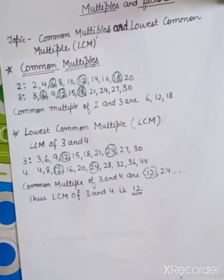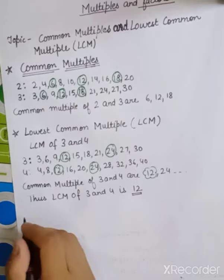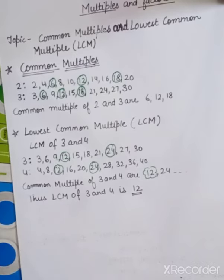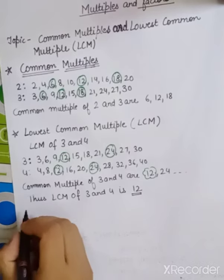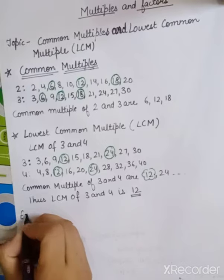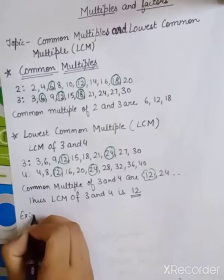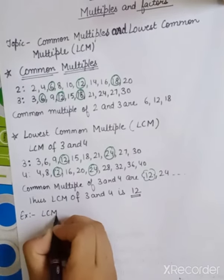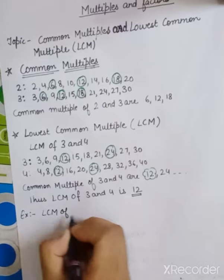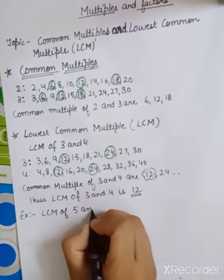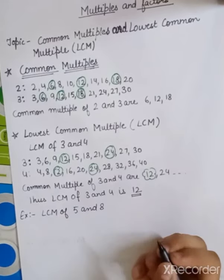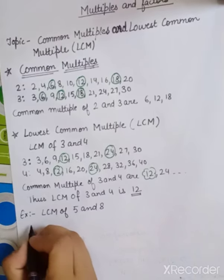Thus, the LCM of 3 and 4 is 12, because it is the smallest common multiple. Now let us find out the LCM of 5 and 8 as another example.